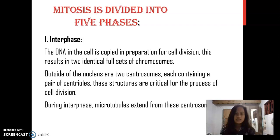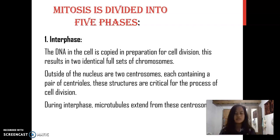Interphase: The DNA in the cell is copied in preparation for cell division. This results in two identical full sets of chromosomes. Outside of the nucleus are two centrosomes, each containing a pair of centrioles. These structures are critical for the process of cell division. During interphase, microtubules extend from these centrosomes.